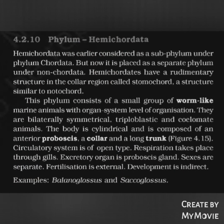Phylum Hemichordata: Hemichordata was earlier considered a subphylum under Phylum Chordata, but now is placed as a separate phylum under non-Chordata. Hemichordates have a rudimentary structure in the collar region called stomochord, a structure similar to notochord. This phylum consists of a small group of worm-like marine animals with organ system level of organization. They are bilaterally symmetrical, triploblastic, and coelomate. The body is cylindrical and composed of an anterior proboscis, a collar, and a long trunk. Circulatory system is open type; respiration through gills; excretory organ is the proboscis gland. Sexes are separate; fertilization is external; development is indirect. Examples: Balanoglossus and Saccoglossus.